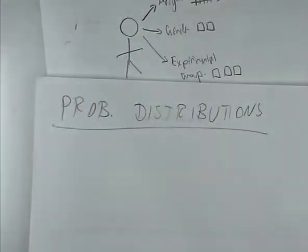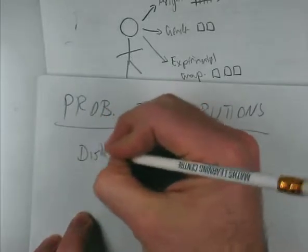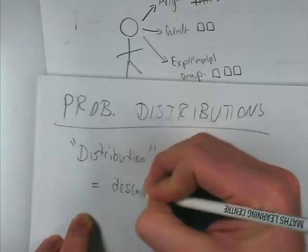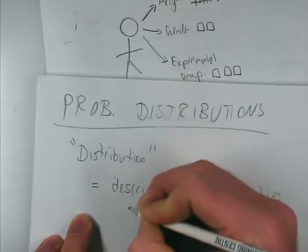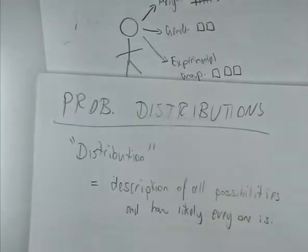Probability distributions — probability is the chances of something happening. Most people have a fairly good understanding of what probability is: you can look at something and say it's unlikely, or likely, or impossible. Distribution is the word for the description of all the possibilities and how likely every one of them is. That's what a distribution is.